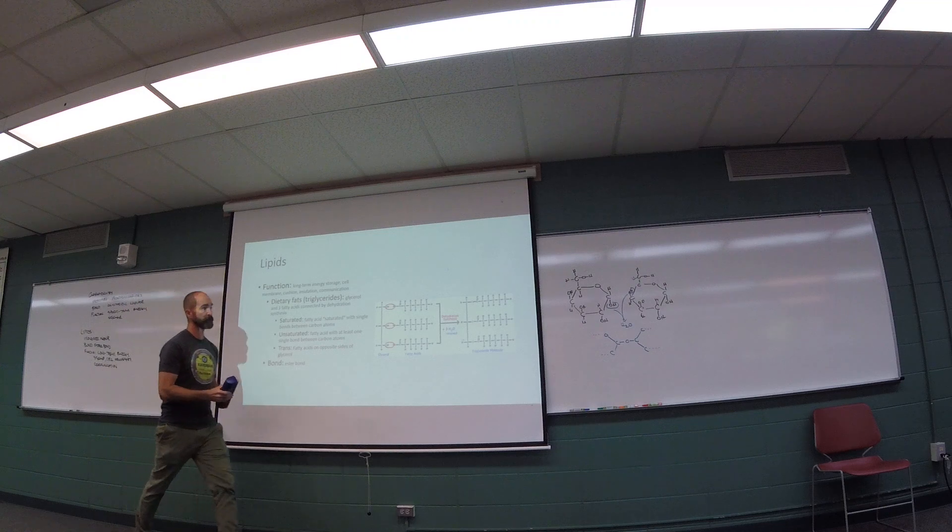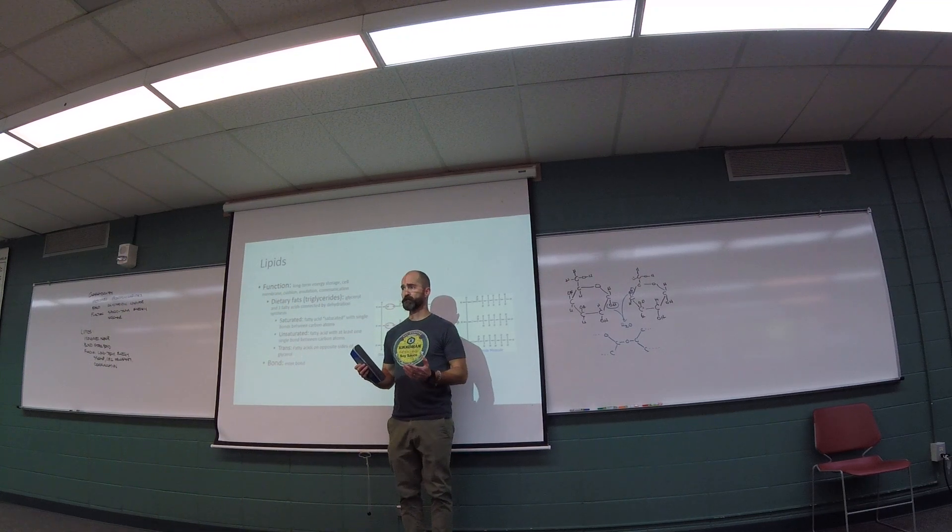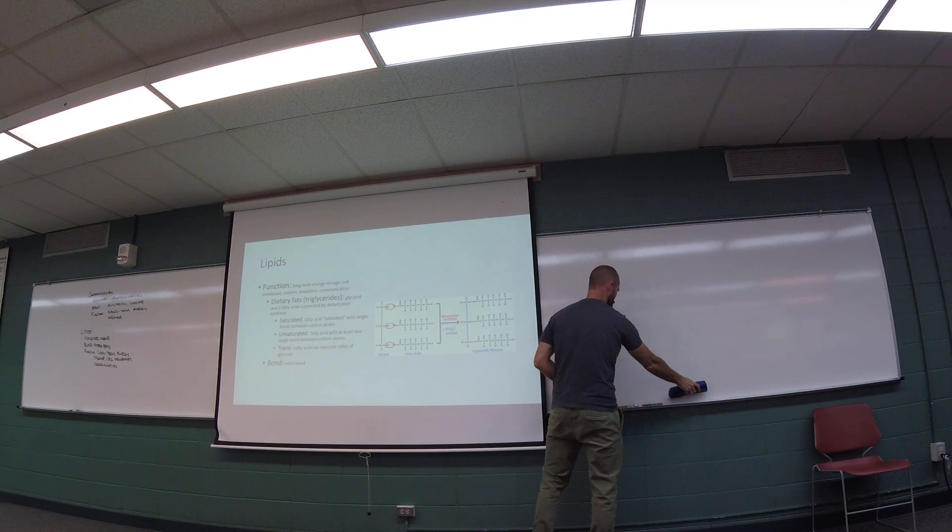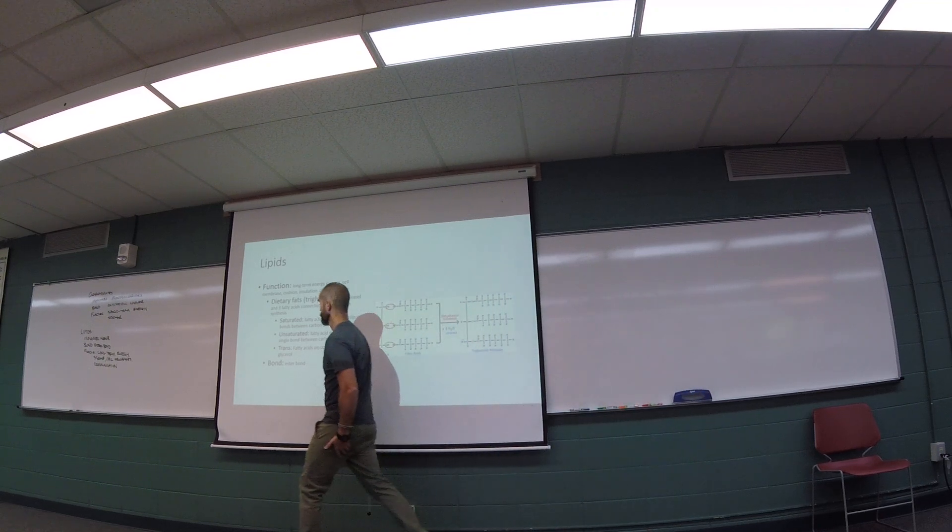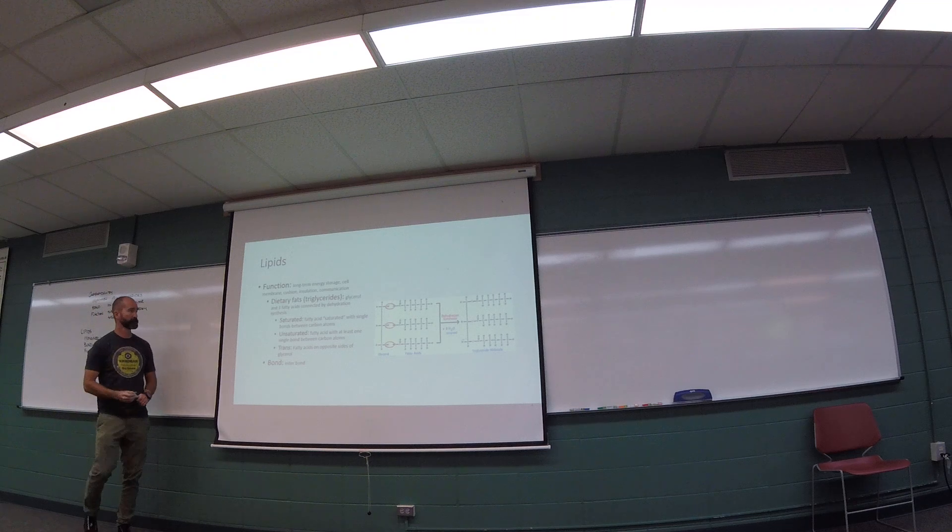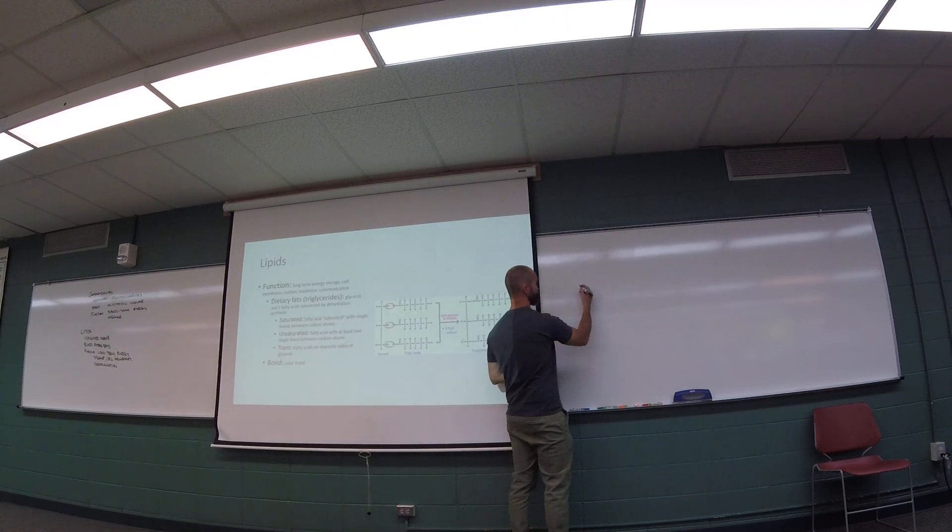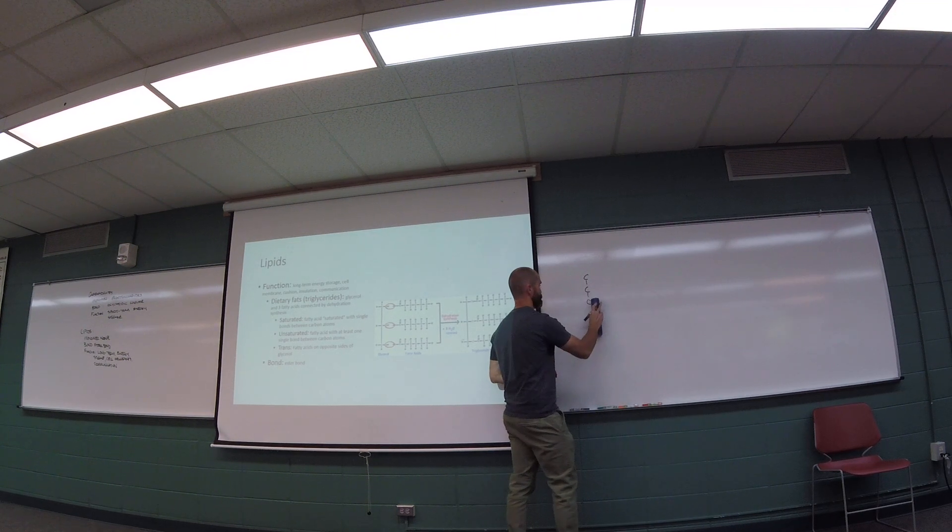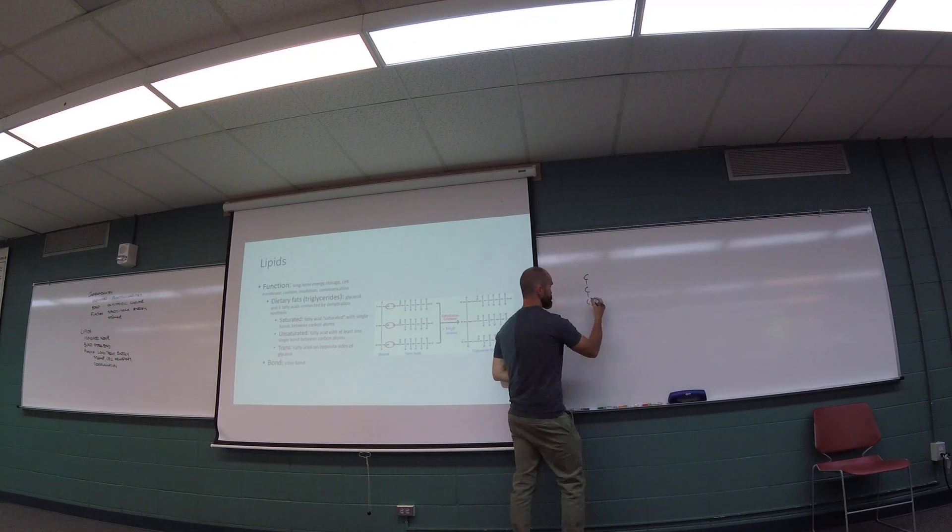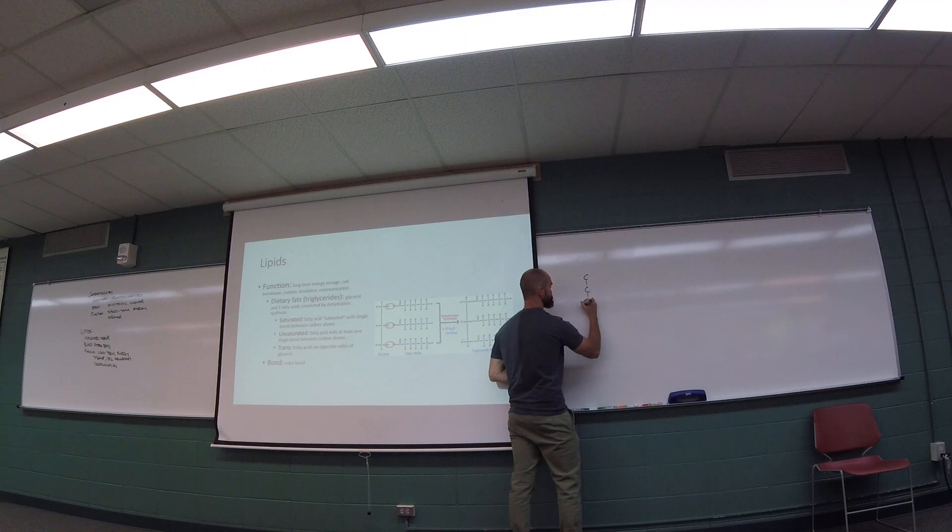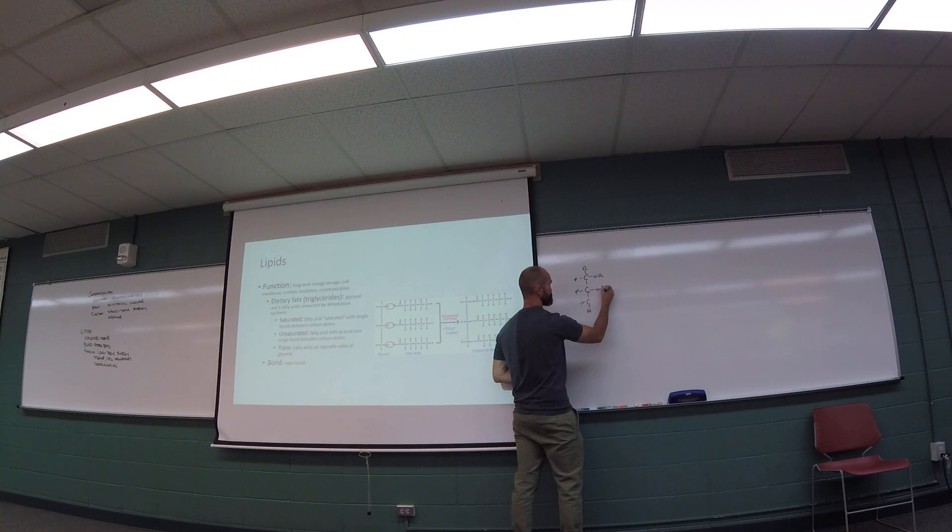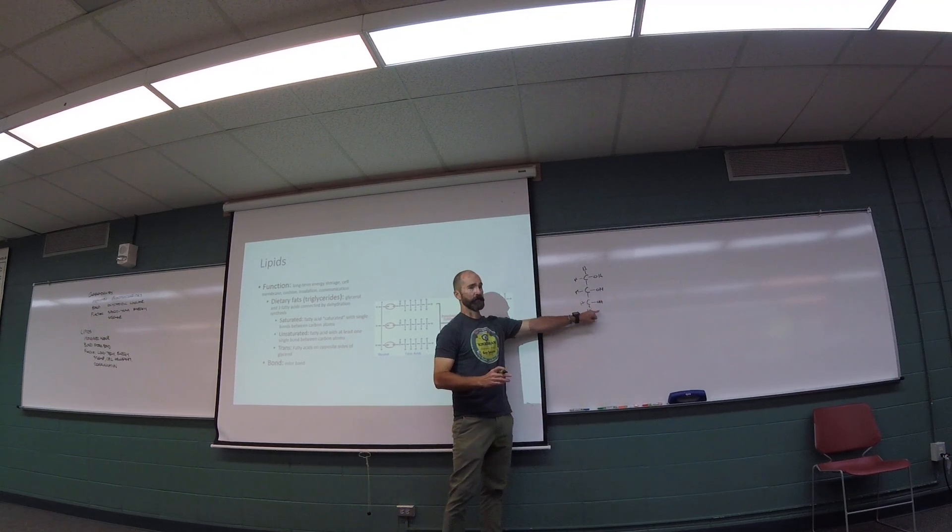So dietary fats, which are collectively called triglycerides, consist of two primary molecules. The first of which is called glycerol. So glycerol looks like this. It's a three carbon chain that's attached to a whole bunch of hydrogens and an oxygen and a hydrogen. So these are called hydroxyl groups. And that's glycerol. That's the backbone of our triglycerides.